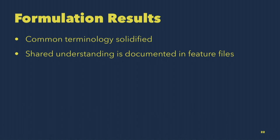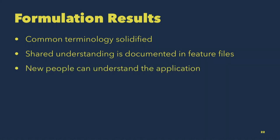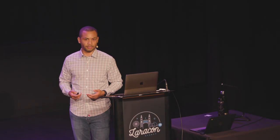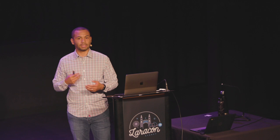At the end of the formulation stage, our common terminology has been solidified. Our shared understanding is documented in feature files, and any new people coming onto the project can understand the application just by reading through them — they know what the application should be doing through concrete examples. On to stage three: automation. This is when we start to implement the features using a combination of behavior-driven development and test-driven development — called the double loop workflow.